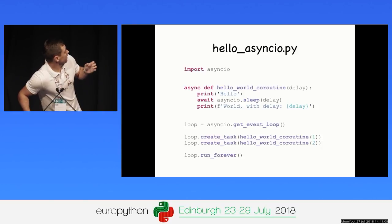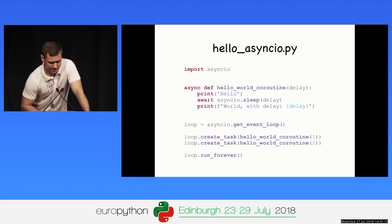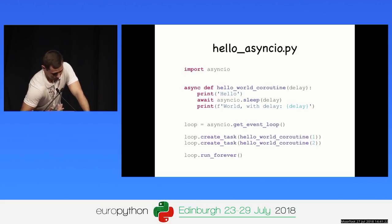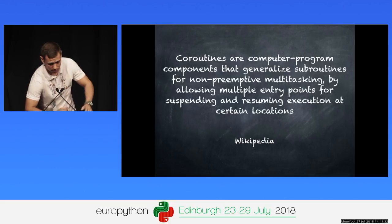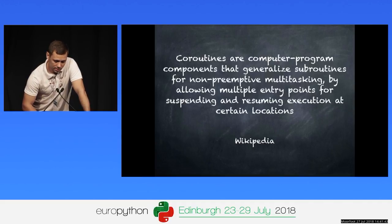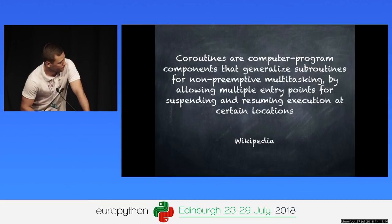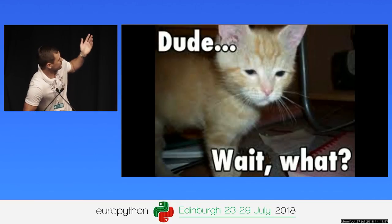We achieved that by defining a coroutine with the async def keywords and using an await expression inside it. But what exactly is a coroutine? Google tells us: 'coroutines are computer program components that generalize subroutines for non-preemptive multitasking by allowing multiple entry points for suspending and resuming execution at certain locations.' My understanding about this definition hasn't changed since the first time I read it — I remember looking at my screen just like the cat in the picture.